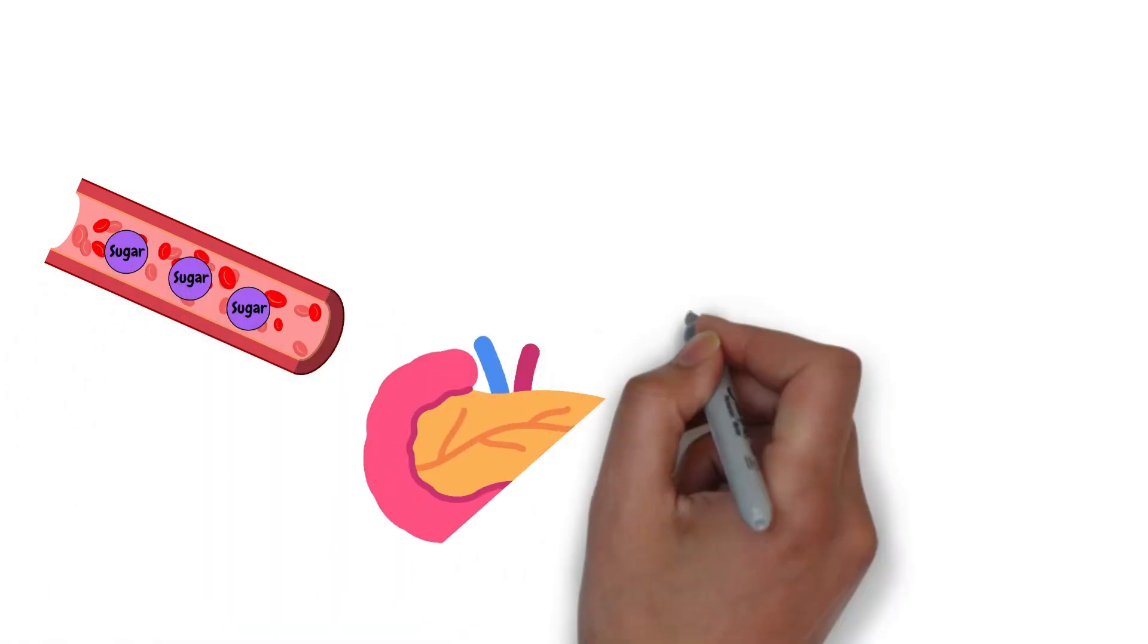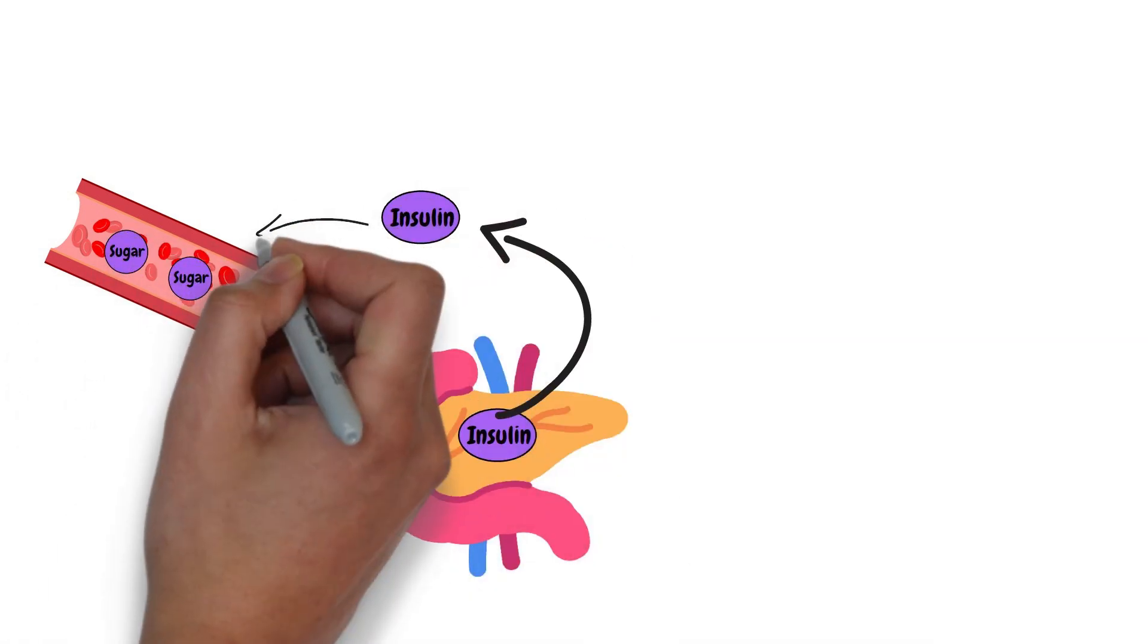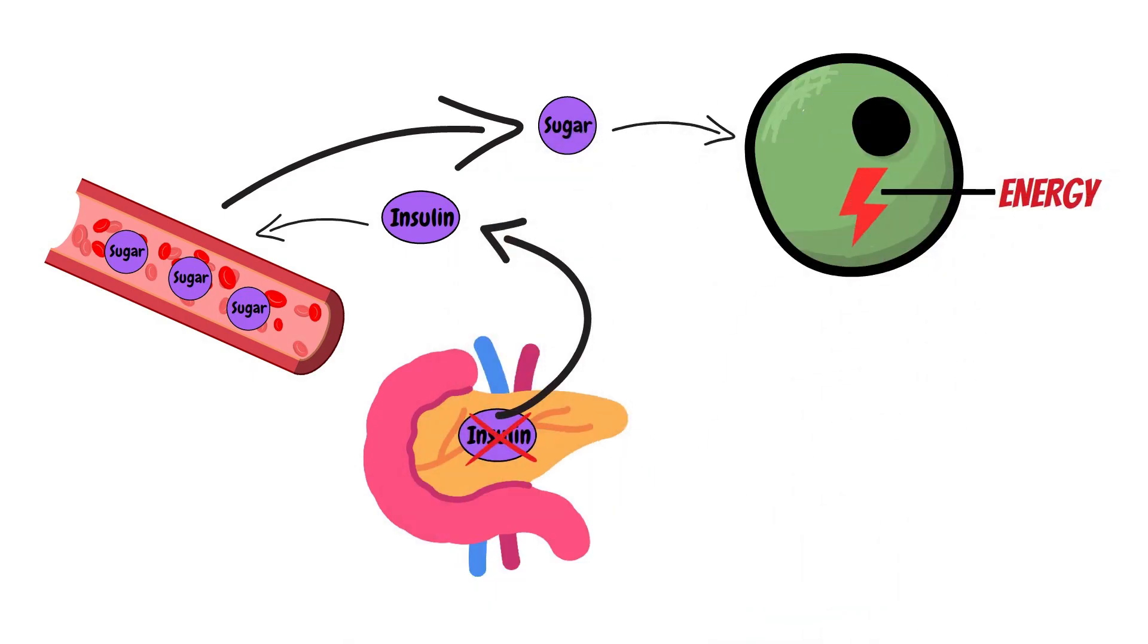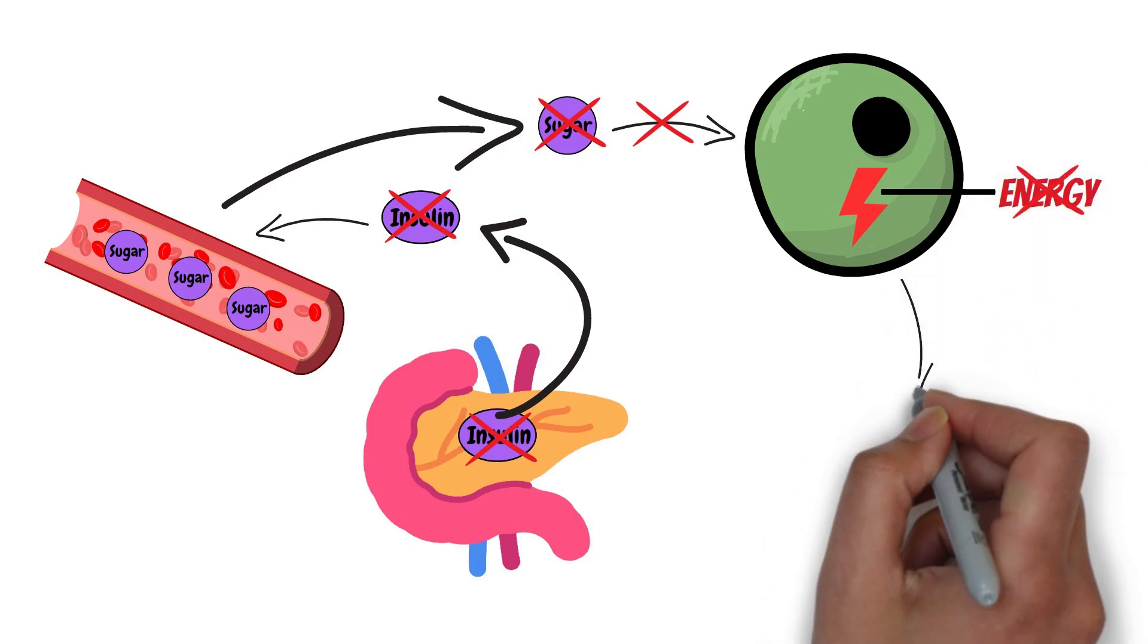To provide us with energy, insulin is needed to transport glucose from blood into our cells to be used for energy. When there is not enough insulin, or the insulin isn't working effectively, it means the sugar in our blood cannot get into our cells, and therefore our cells do not receive the energy they need. As a result, we feel tired.